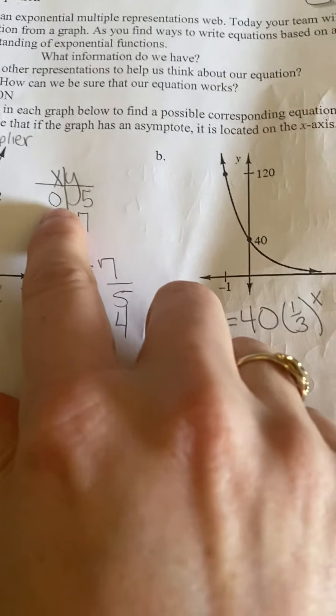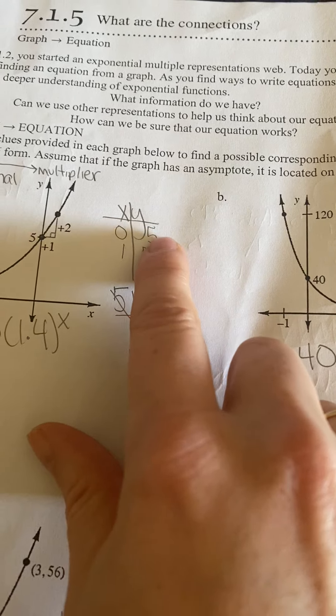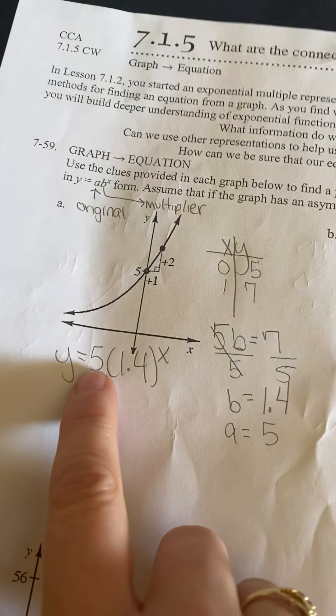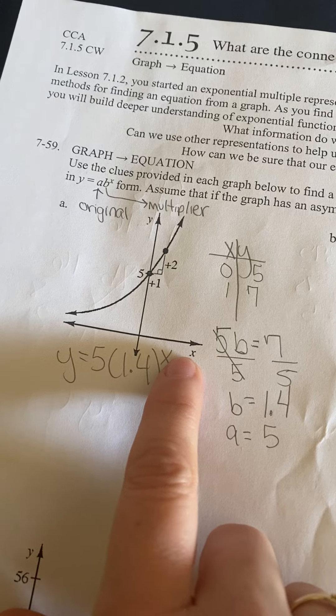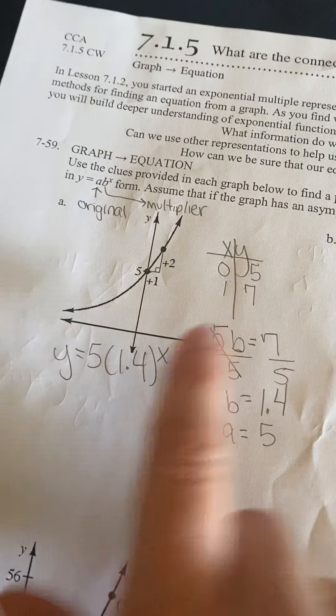Your original number, where x is 0, y is 5. So then you plug it in: y equals ab to the x, so 5 times 1.4 to the x.